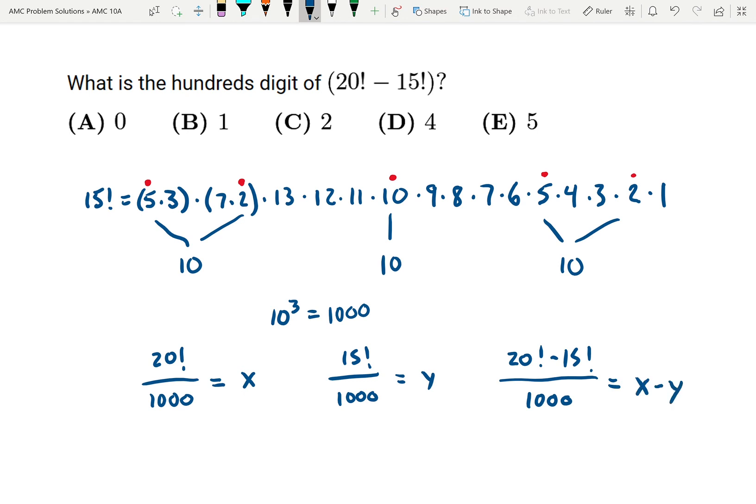I know that x is an integer, I know that y is an integer, therefore x minus y is an integer. Therefore 20 factorial minus 15 factorial divided by a thousand equals an integer, which tells us that that expression is divisible by a thousand. Since 20 factorial minus 15 factorial is divisible by a thousand, I know that the hundreds digit is 0, and that's choice A.